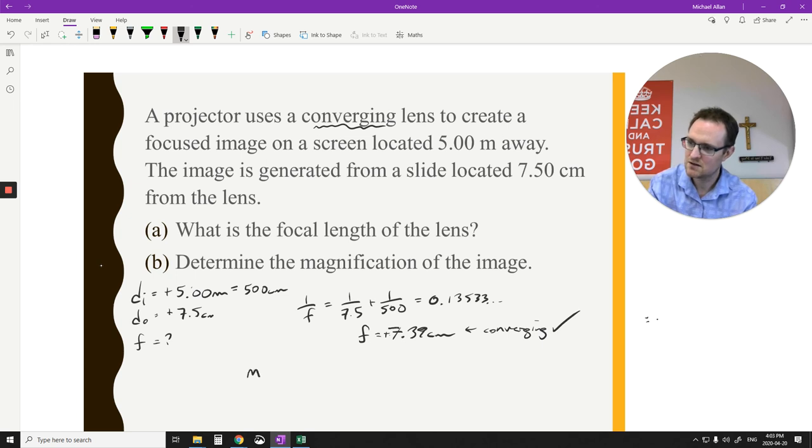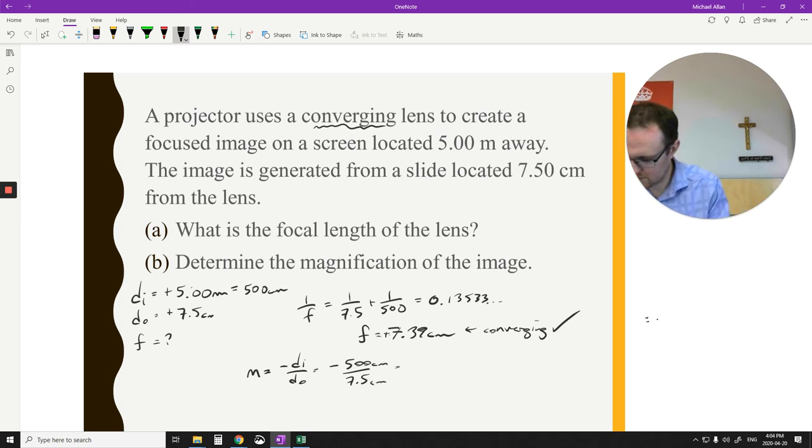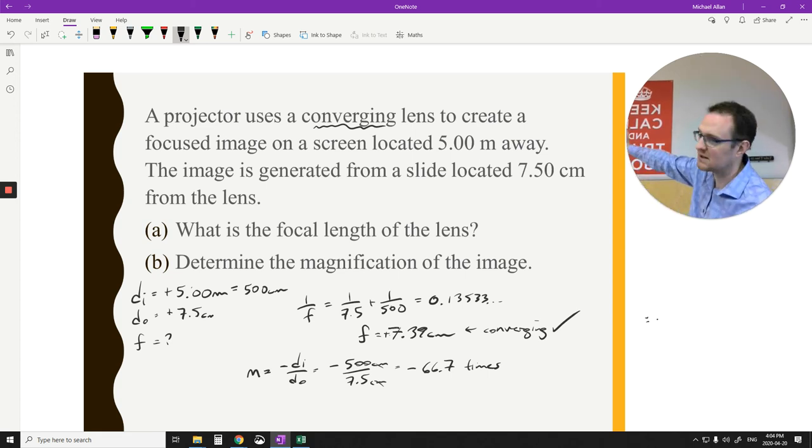What's the magnification of this image? So we're just looking for the m value here. Because we have the di and the do, I'm going to go negative di over do. So negative 500 over 7.5. Magnification is negative 66.7. And some people put x here for times. There's no units because centimeters divided by centimeters cancel out. So this is times everything by negative 66.7 times, which means that the image that we see is technically inverted of what the object is in there. Even though what we see looks upright, it's technically inverted.